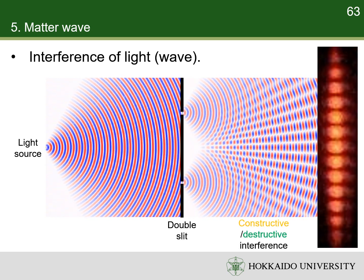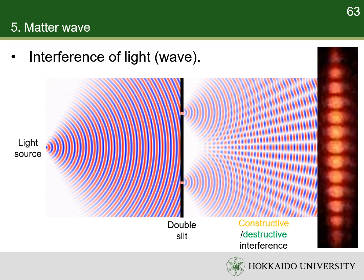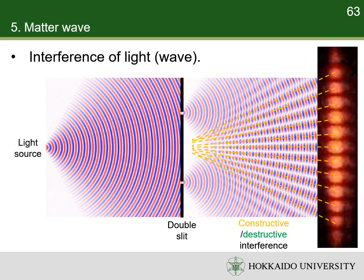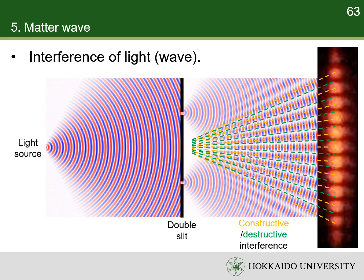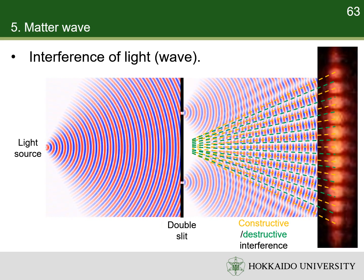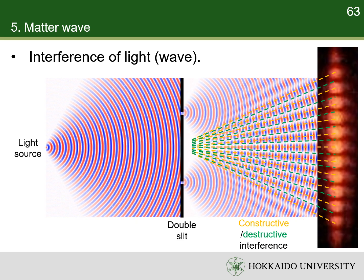The wave nature of light causes interference. On the screen, constructive interference produces bright bands, while destructive interference produces dark bands. This result would not be expected if light consists of classical particles.